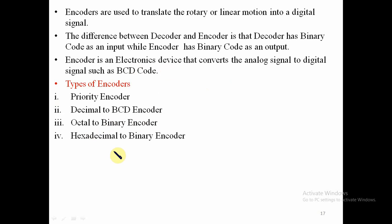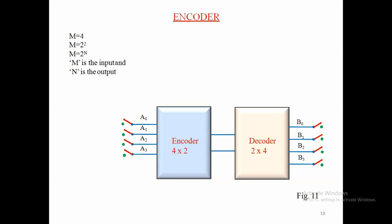The types of encoder include: priority encoder, decimal to BCD encoder, octal to binary encoder, and hexadecimal to binary encoder. Here is a 4-to-2 encoder — it has 4 input lines and 2 output lines. Those 2 output lines are connected as the input of a 2-to-4 decoder, so the 2 outputs of the encoder act as the input of the decoder.